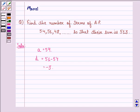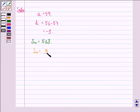And it's given to us that sum of N terms is 513. But we also know that sum of N terms equals N by 2 into 2A plus N minus 1 into D.